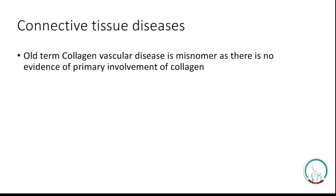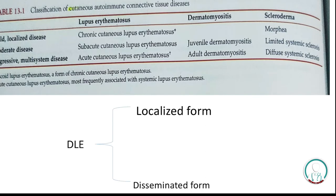Before starting the topic proper, I would like to note that the term collagen vascular disease is a misnomer, as there is no evidence of primary involvement of collagen. When writing the causes of pyrexia of unknown origin or joint pain, we used to write the term collagen vascular disease. But nowadays this term is considered a misnomer, and the term connective tissue disease is used. Today there will be discussion of some of the cutaneous autoimmune connective tissue diseases.